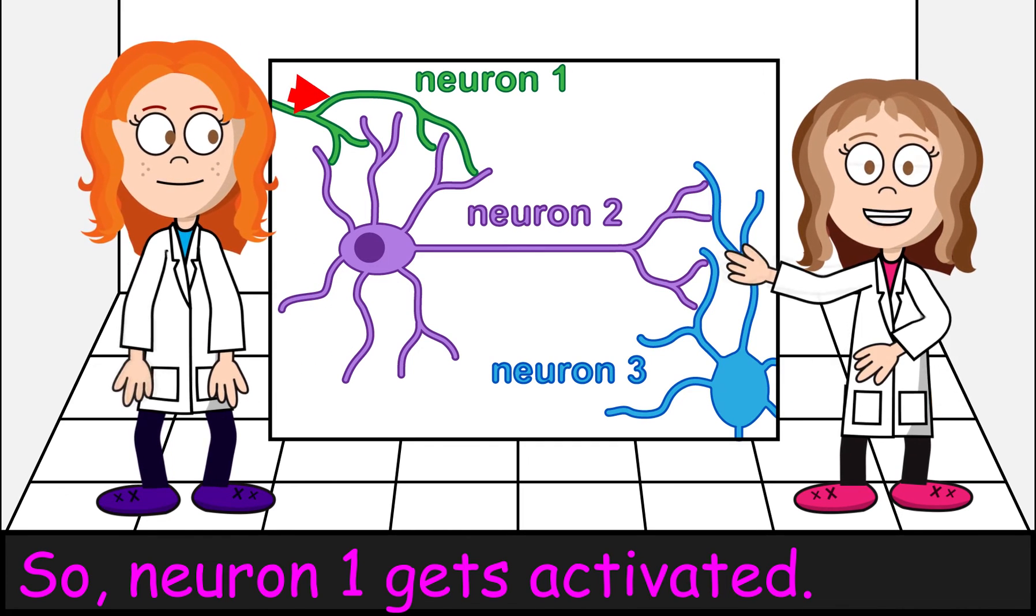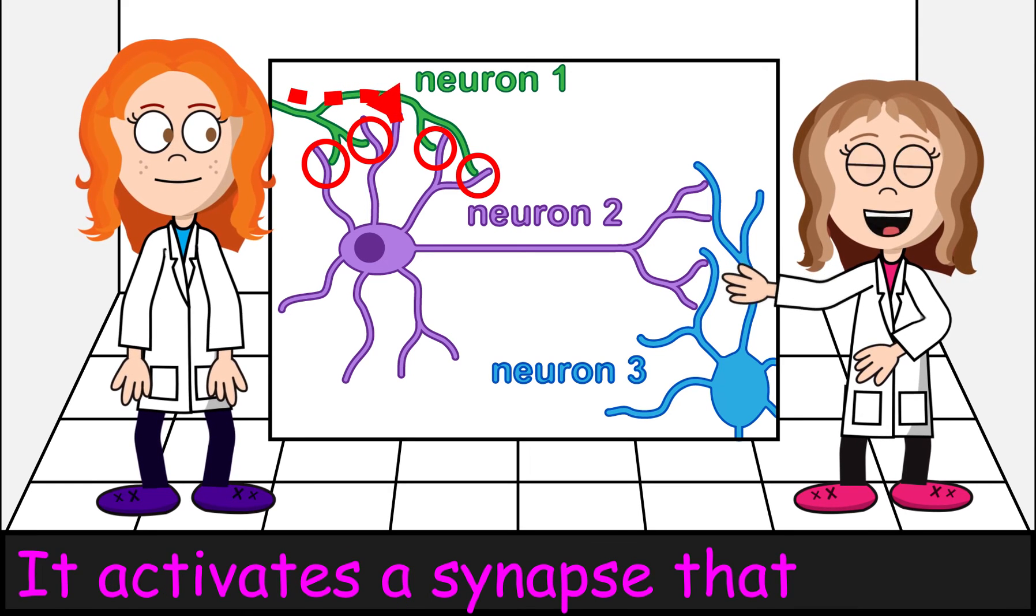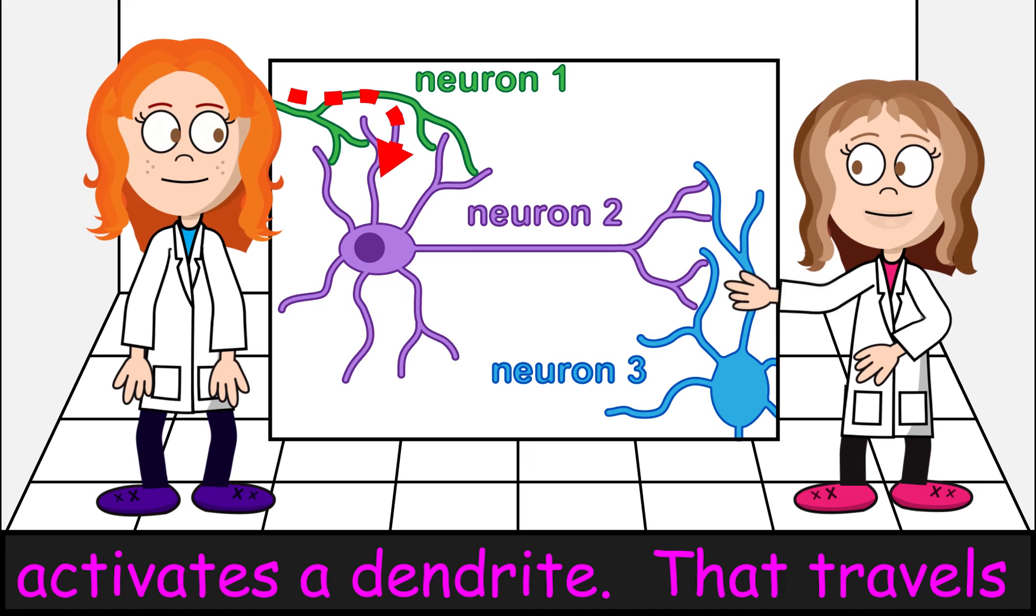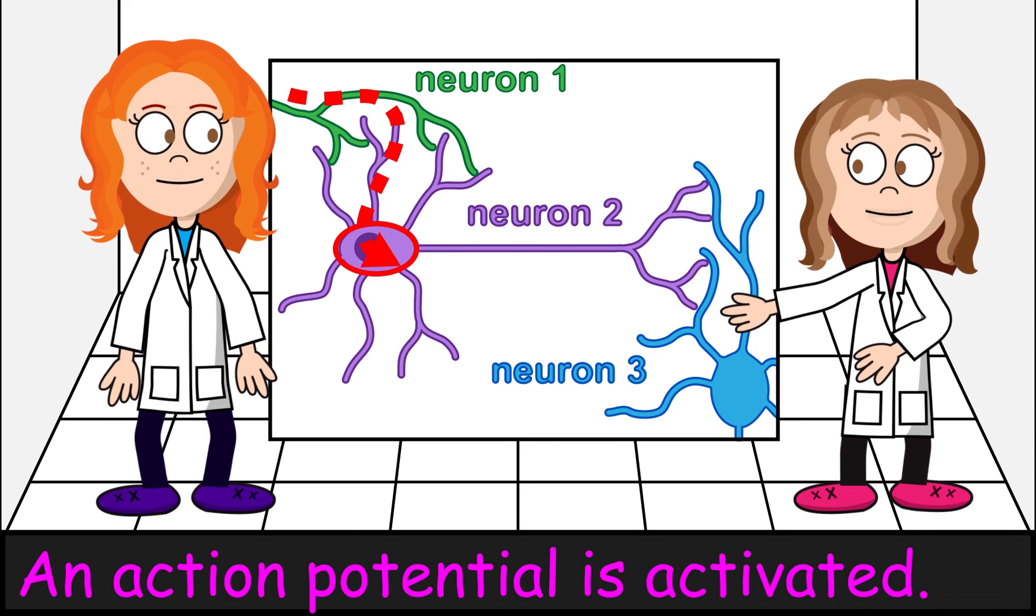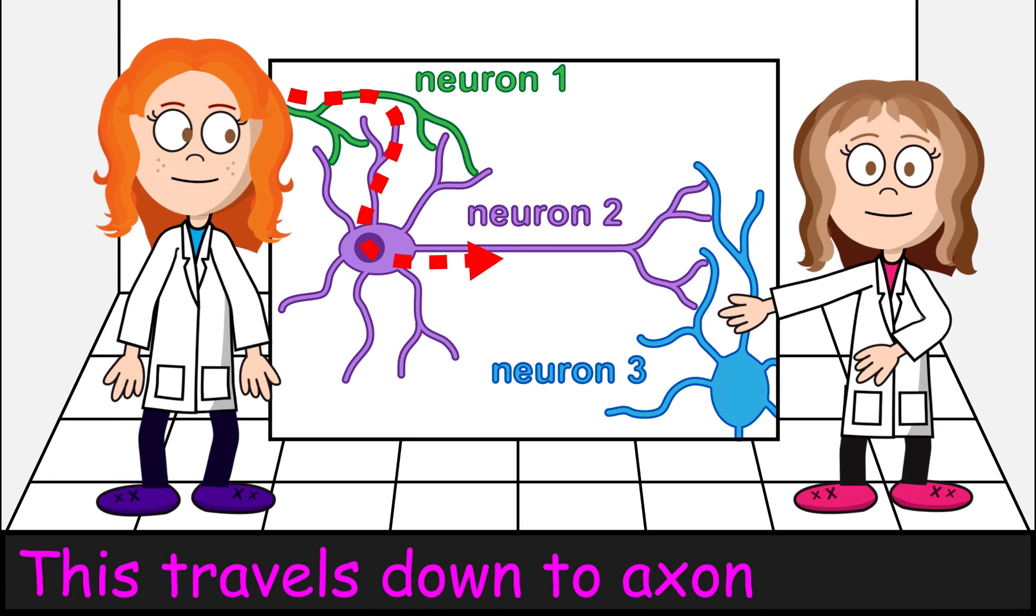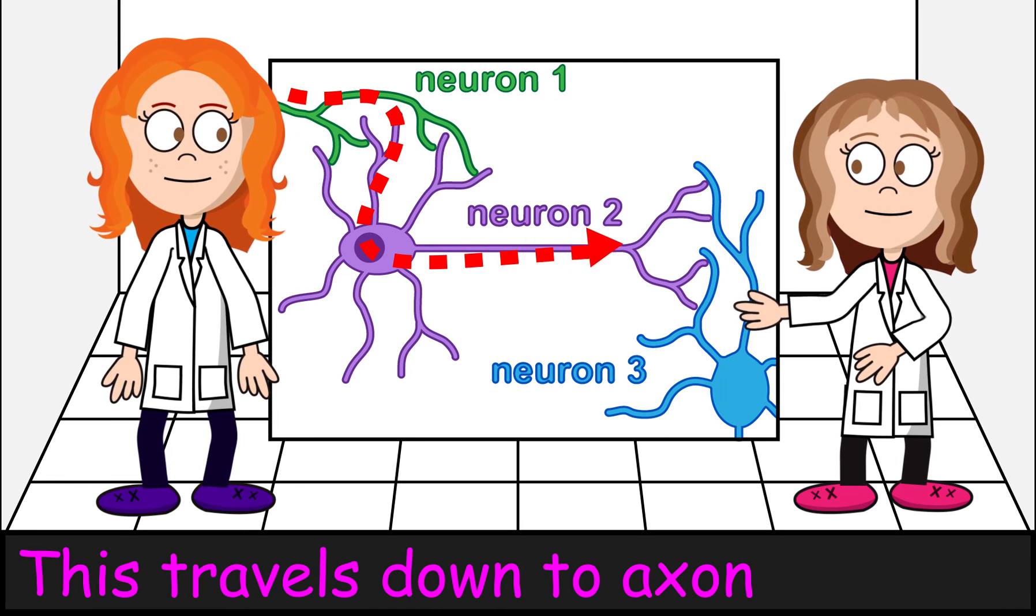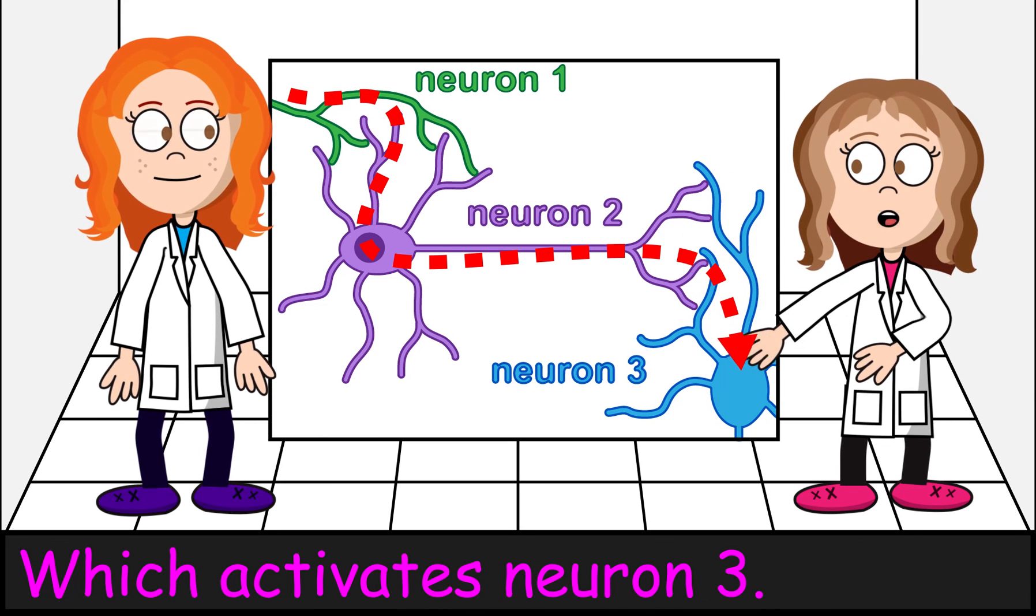So neuron one gets activated. It activates the synapse and activates the dendrite. Then travels down the dendrite. It goes to the cell body. Then an action potential is activated. This travels down the axon to the next neuron. Let's activate neuron three.